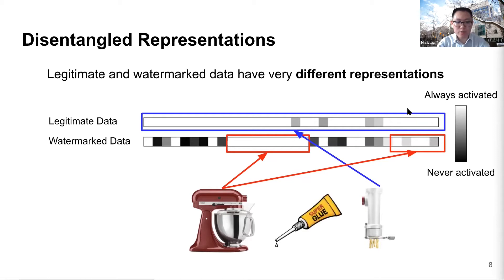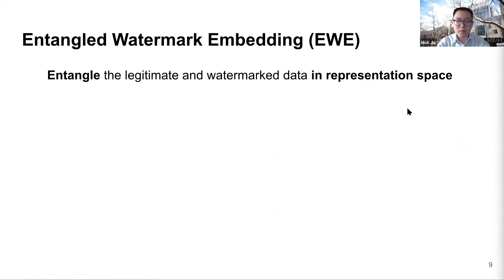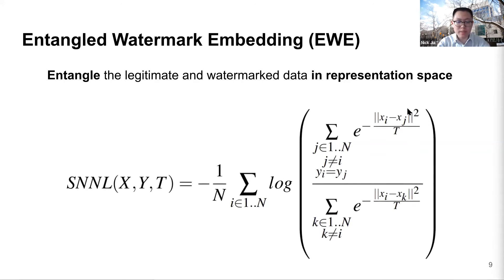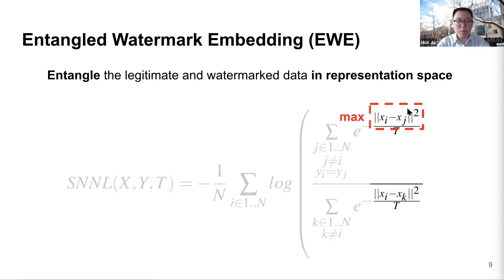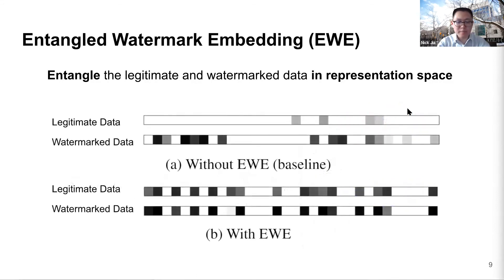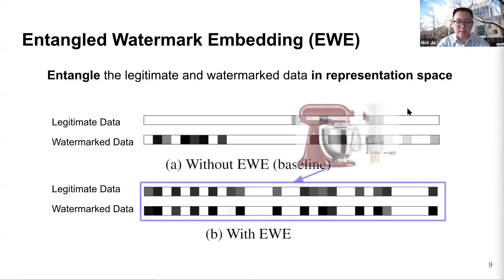To solve this problem, our intuition is to glue the mixer and the pasta maker together. More formally, we want to encourage the legitimate data and watermarked data to activate similar neurons — in other words, entangle them. To do so, we maximize the soft nearest neighbor loss. What it does is quite simple: we maximize the distance between data points that are both legitimate or both watermarked. So in the case that one point is watermarked and the other is from any class of the legitimate data distribution, we minimize the distance between these two points. The effectiveness of maximizing this loss is very promising — the same set of neurons are activated by either type of data. In other words, the pasta maker and the mixer are glued together, and if the adversary wants the model to make pasta, the mixer would also be running even though there is nothing in it.